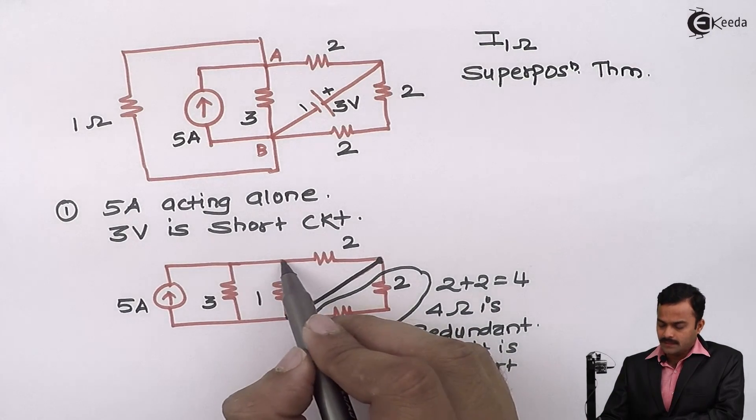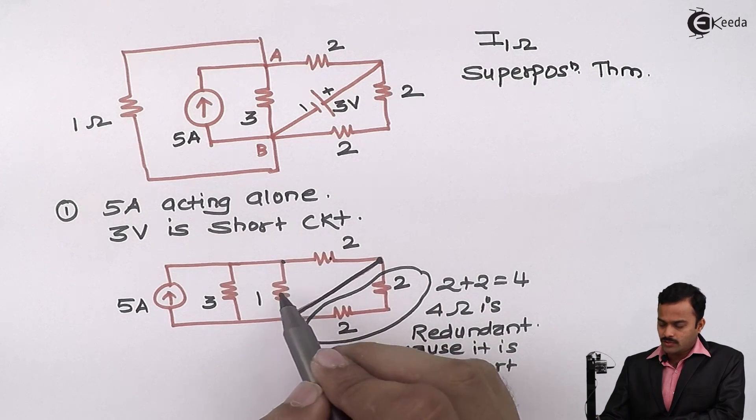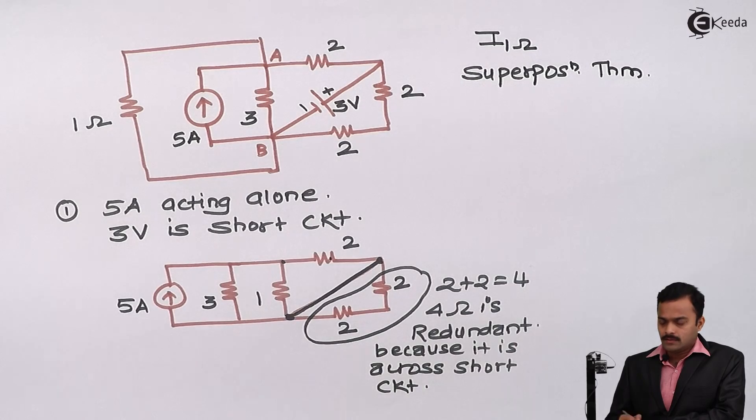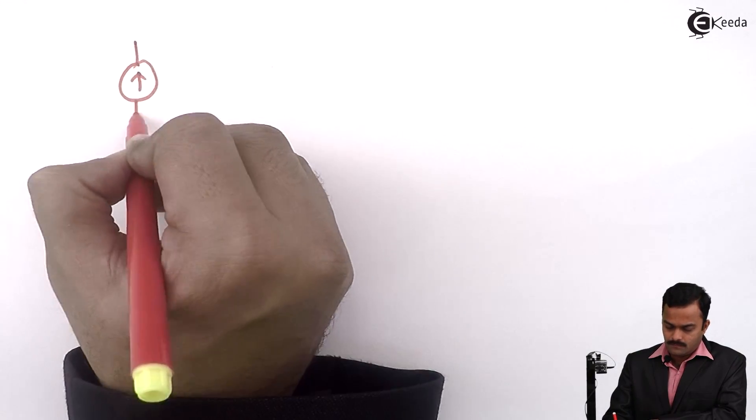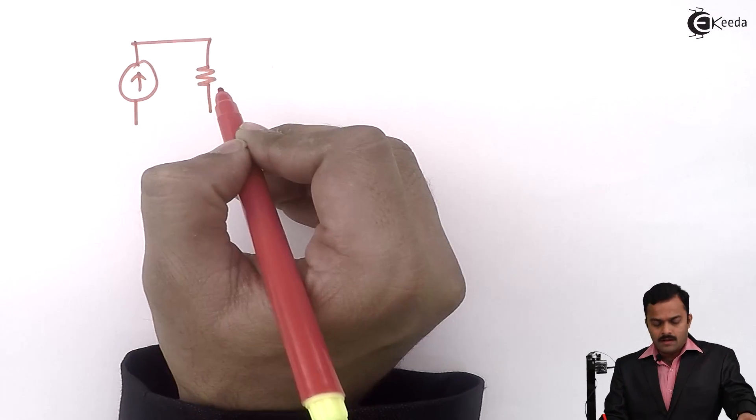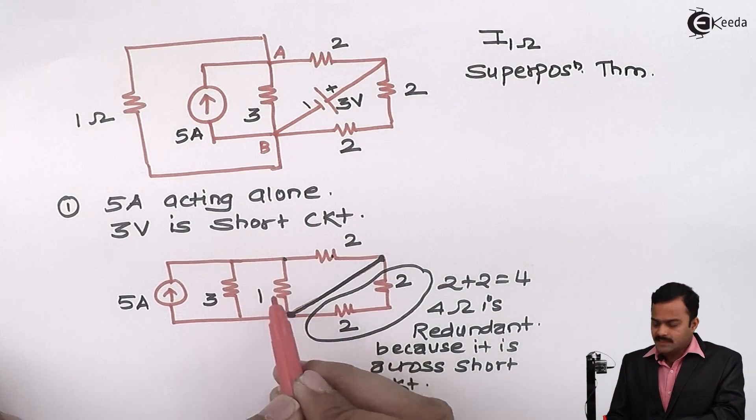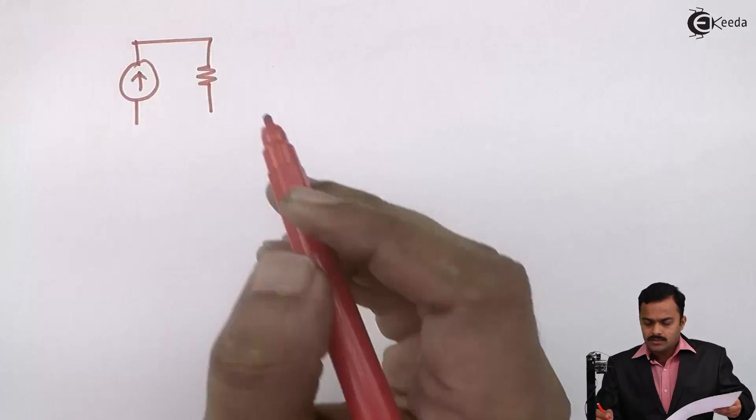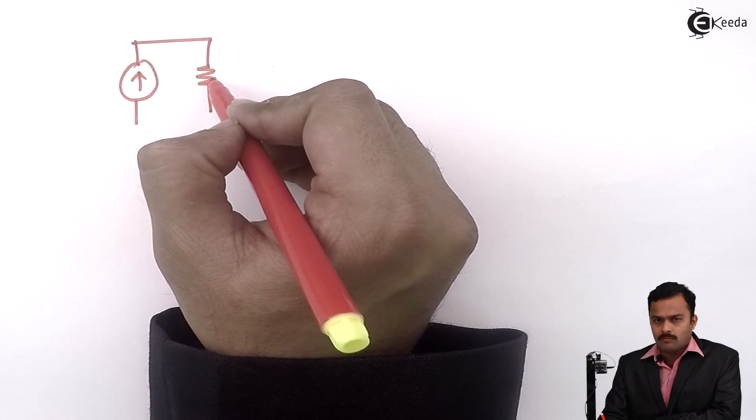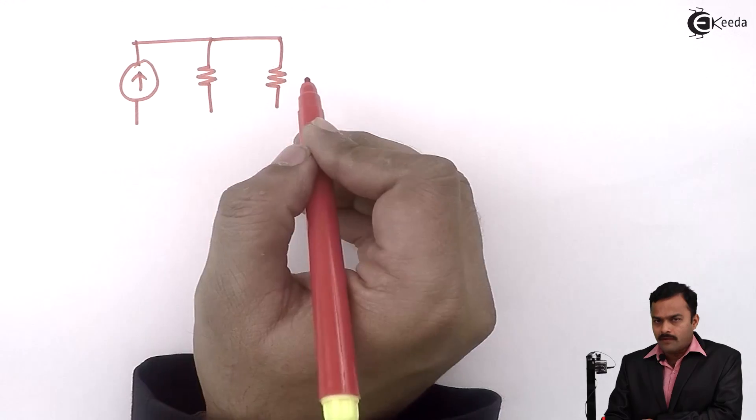Moreover, if you see properly, this 2 ohm and this 1 ohm is actually comes in parallel. So I will redraw the circuit. I can do one thing. In this circuit, I can interchange the position of 3 ohm and 1 ohm. That is not going to affect the circuit.